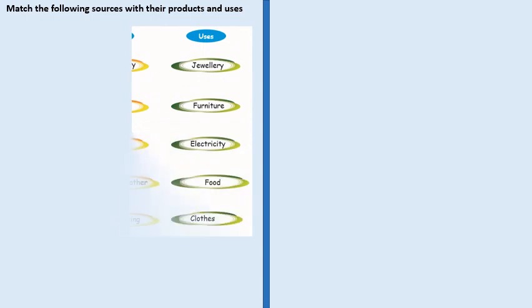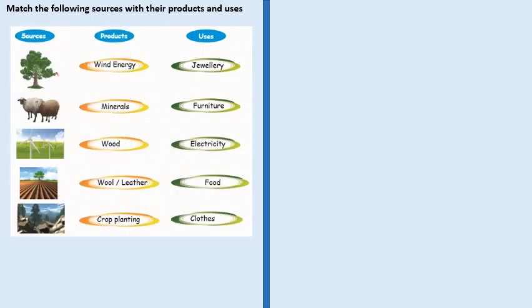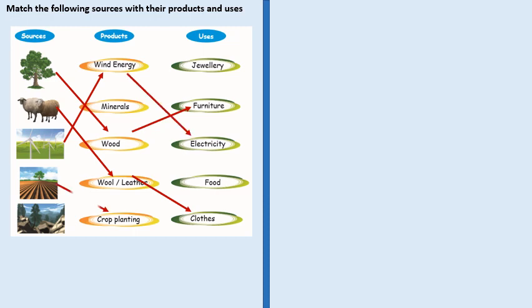Match the following sources with their product and uses. The source is a tree; the product is wood and use is furniture. From sheep or lamb, we get wool or leather, and we make clothes. We have windmills; the product is wind energy for electricity. We have crops for crop planting which gives us food. Then we have ores; the product is minerals and uses are jewelry.